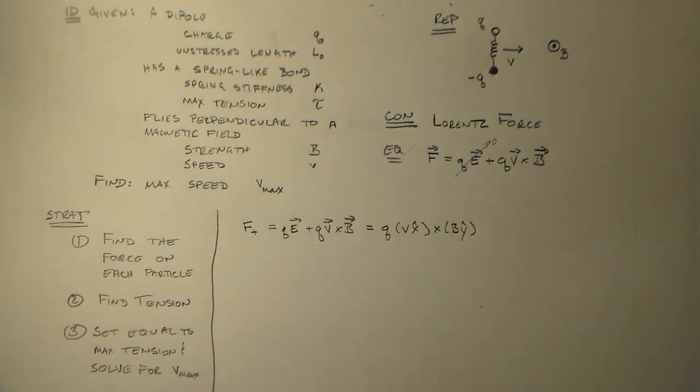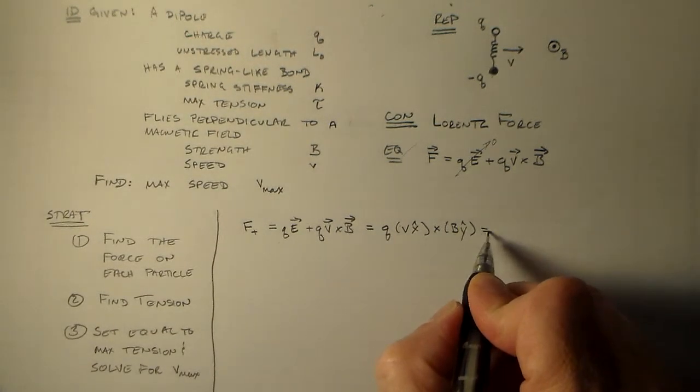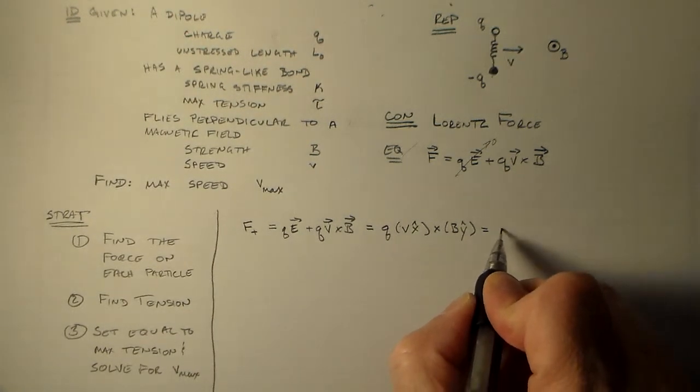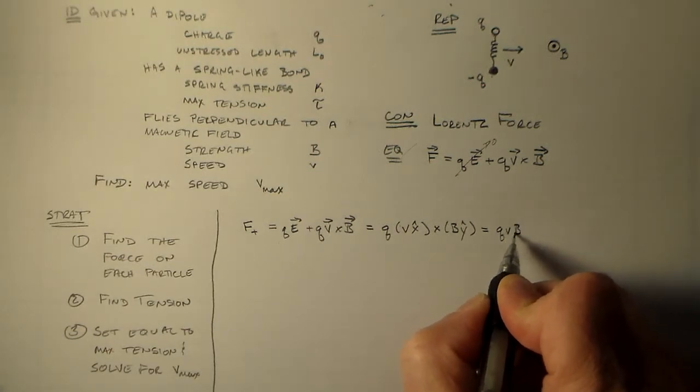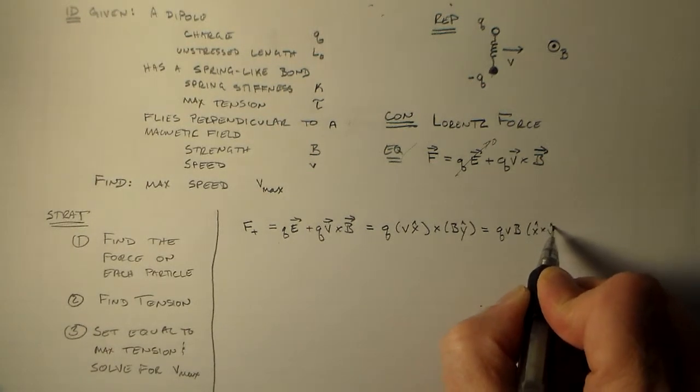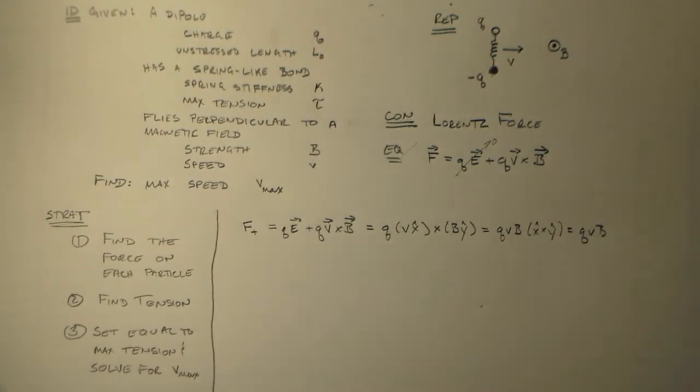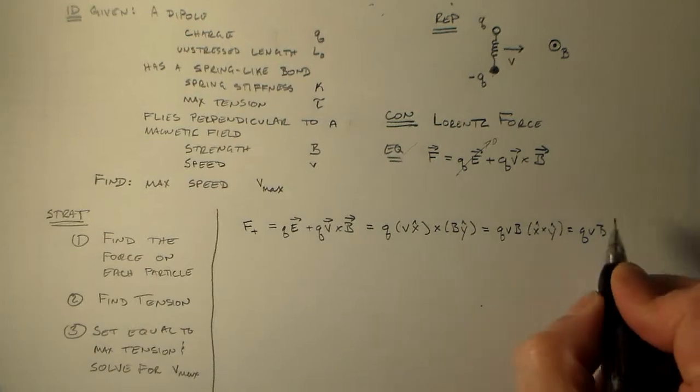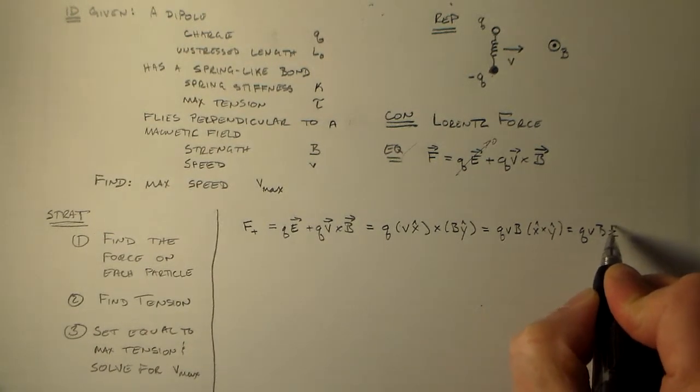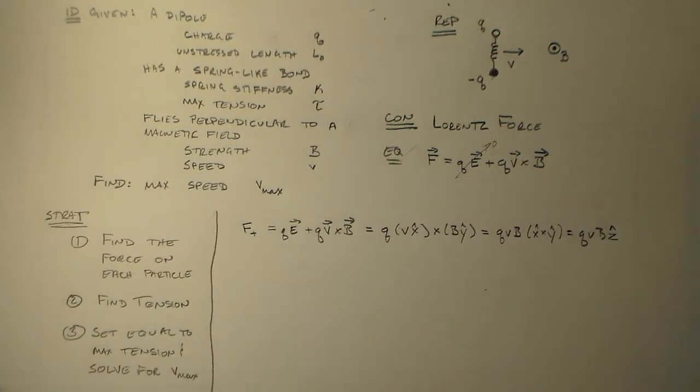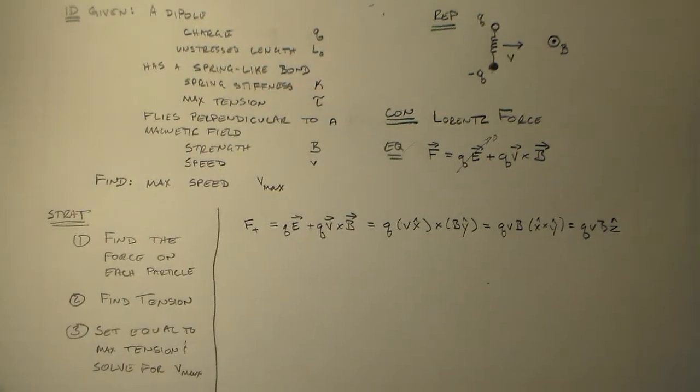So we have times V X hat cross B and B is coming out of the page. So B Y hat, all right? And so that's equal to QVB times X hat cross Y hat. And X hat cross Y hat is just Z hat, okay?